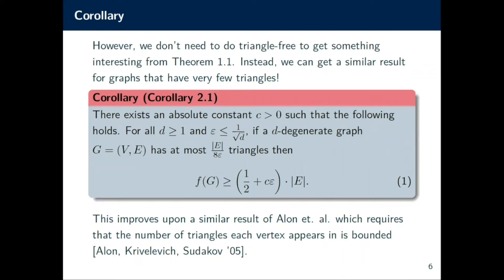We actually don't need to have the strong guarantee of triangle-freeness. With a little more work using Theorem 1.1, we can actually also get the following result, which says that as long as you know that the total number of triangles in the graph is not too large, then we're guaranteed that we can still get a similar bound.